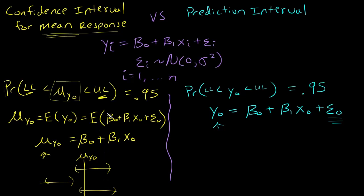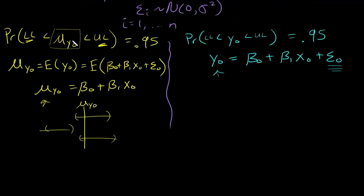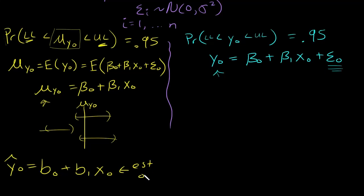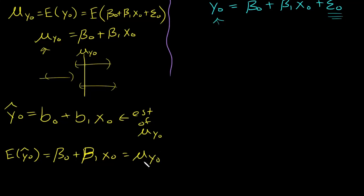Generally, to construct a confidence interval — and I'll provide links in the description for more detail — the idea is that we don't know beta, so we find an estimated value of beta, call it lowercase b. This might be a least squares estimator, and this gives us our estimate of the mean response, which is y-hat. As long as these are unbiased estimators of beta naught and beta 1, the expected value of this estimate equals beta naught plus beta 1 times x naught — exactly equal to mu y-naught, the mean response.